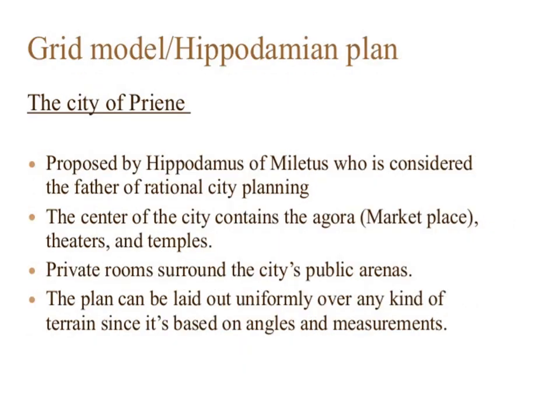This slide refers to the grid model, the Hippodamian plan for the city of Priene, proposed by Hippodamus of Miletus, who is considered the father of rational city planning. The center of the city contains the agora — the marketplace — theatres and temples. Private rooms surround the city's public arena. The plan can be laid out uniformly over any kind of terrain since it is based on angles and measurements.